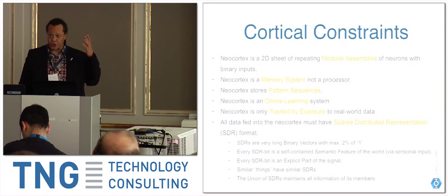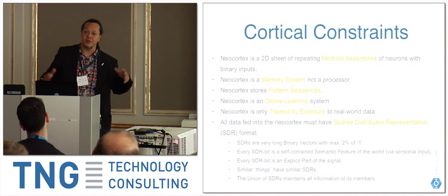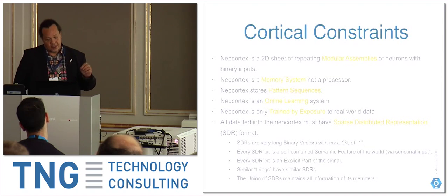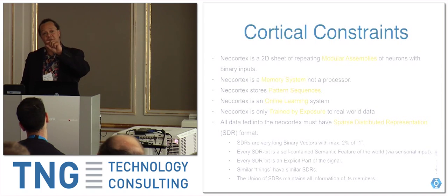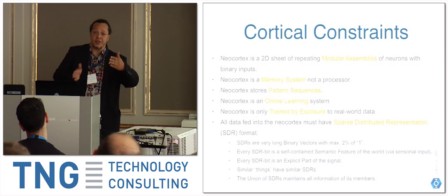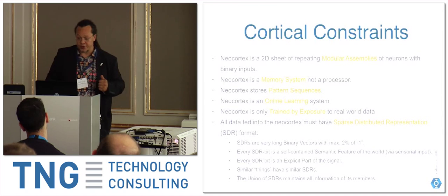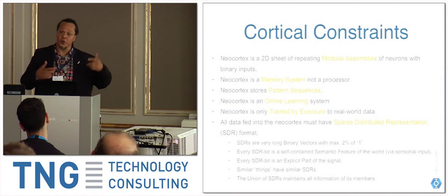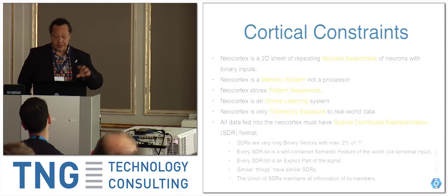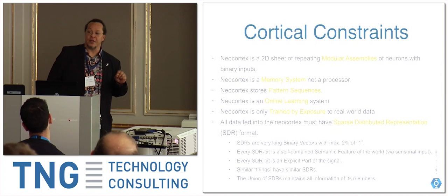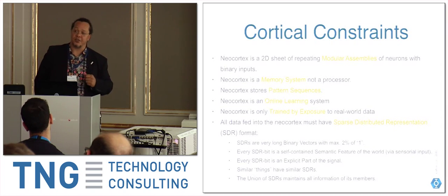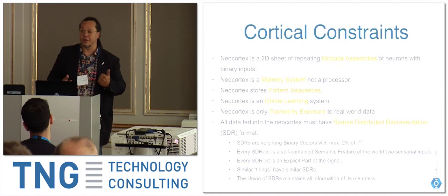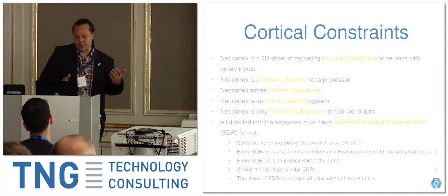The neocortex is a 2D sheet - a structure with two dimensions. The reason it's so wrinkled is that it brings a two-dimensional sheet into the small volume of the brain. Observed under a microscope, you find a repeating structure - little modules of neurons repeated all over the neocortex. These structures look the same regardless of whether you look at the visual cortex, auditory cortex, or any other part. Even a skilled neuroanatomist would have a hard time distinguishing the neocortex of a human from a mouse at the microscopic level. It seems to be a stable structure across all mammals.